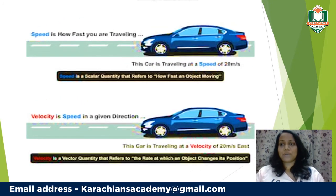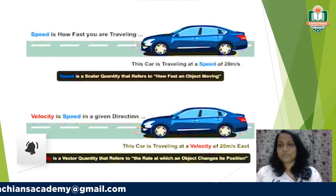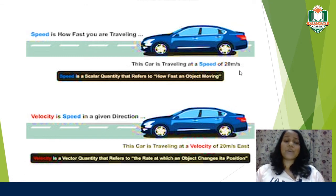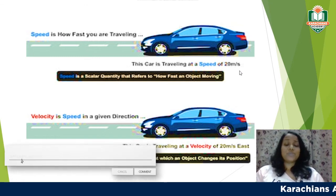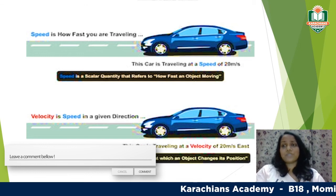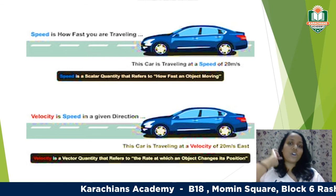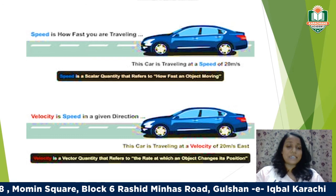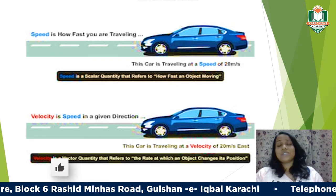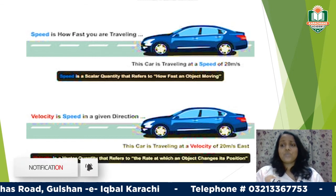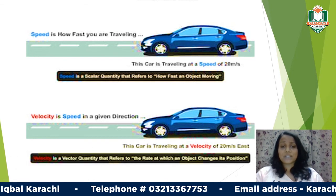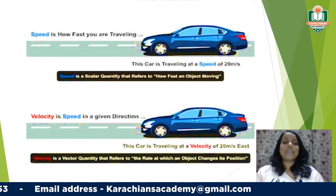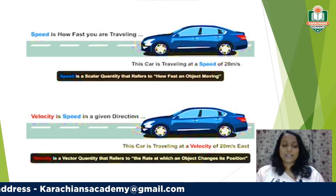Similarly, speed and velocity differ in the same way. If a car travels at 20 meters per second, that's speed — a scalar quantity with magnitude only and no direction. But if we say the car is moving at 20 meters per second eastward, that's velocity — a vector quantity because it gives both magnitude and direction.